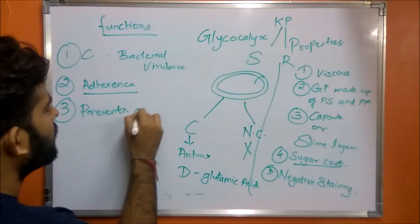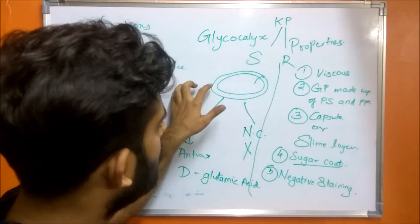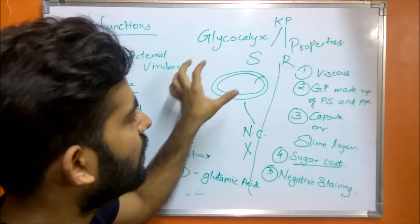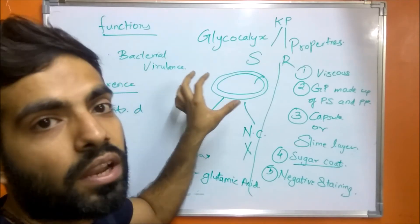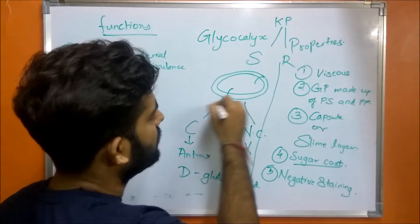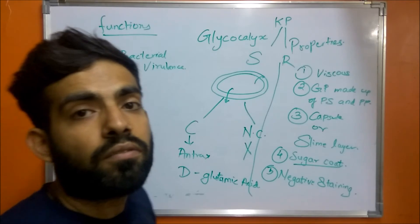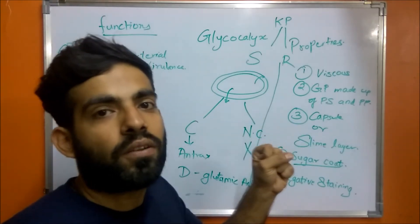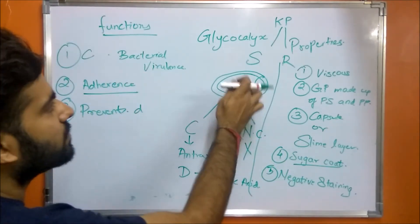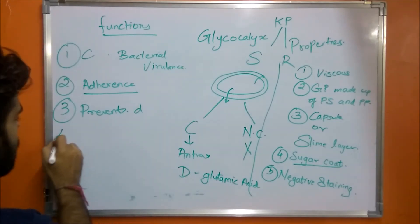The third function is that glycocalyx prevents dehydration. The viscous layer present on the cell wall surface does not allow the movement of water from inside to outside, thereby retaining the water content of the cell.